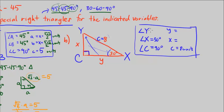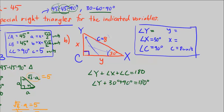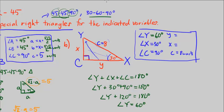Knowing two angles, I can find the third. Angle Y + 30 + 90 = 180 degrees. Combining: angle Y + 120 = 180, so angle Y = 60 degrees. I could have deduced this immediately — it's a special right triangle, and since one angle is 30 degrees and another is 90, the third must be 60.